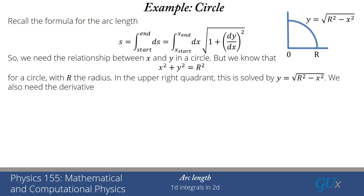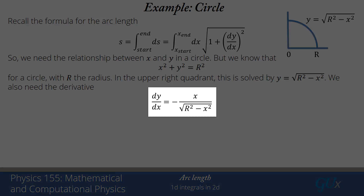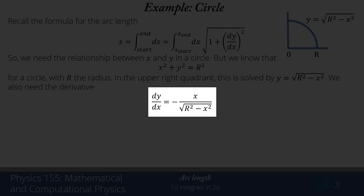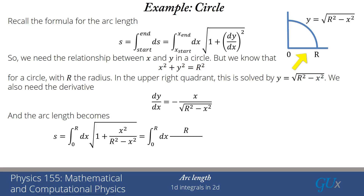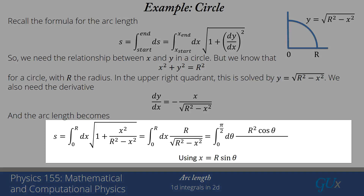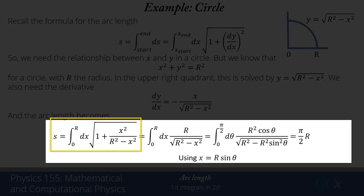In order to calculate the arc length, I also need the derivative. Using the chain rule, I get minus x divided by the square root of r squared minus x squared. I have to square that and add it to one in order to do the arc length integral. My x coordinate runs from zero to r, so I have an integral from zero to r of dx times the square root of 1 plus x squared divided by (r squared minus x squared). Putting everything over the common denominator, I get r squared minus x squared plus x squared — the x squareds cancel — leaving r squared. Taking the square root, I'm left with the integral from zero to r of r divided by the square root of r squared minus x squared.